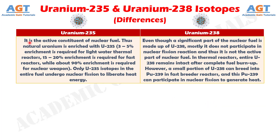Number 9. Uranium-235 is the active constituent of nuclear fuel. Thus natural uranium is enriched with Uranium-235: 3–5% enrichment is required for light water thermal reactors, 15–20% enrichment is required for fast reactors, while about 90% enrichment is required for nuclear weapons. Only U-235 isotopes in the entire fuel undergo nuclear fission to liberate heat energy, whereas even though a significant part of nuclear fuel is made up of Uranium-238, mostly it does not participate in nuclear fission and thus is not the active part of nuclear fuel.